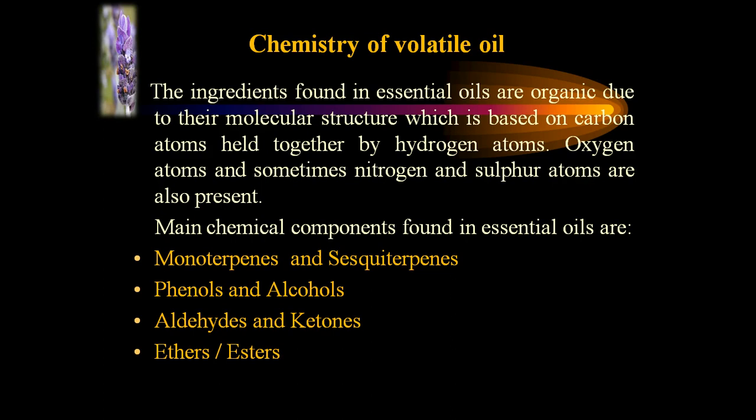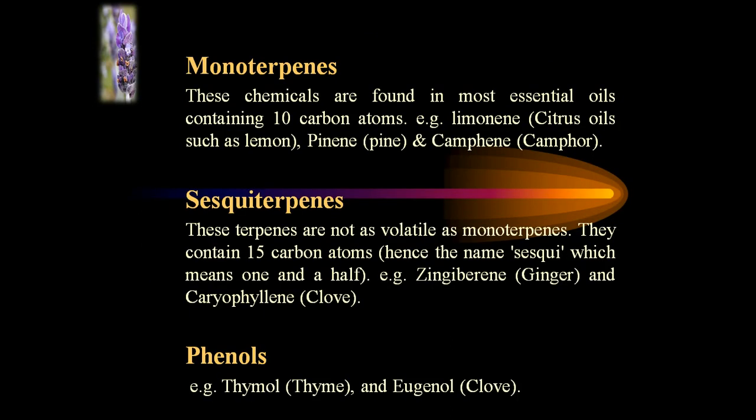Many chemical components found in essential oils are monoterpenes and sesquiterpenes, phenols and alcohols, aldehydes and terpenes, ethers and esters. In monoterpenes, these chemicals are found in volatile oils containing 10 carbon atoms, such as limonene, present in citrus fruits and citrus oils, pinene present in pine, and camphene present in camphor.